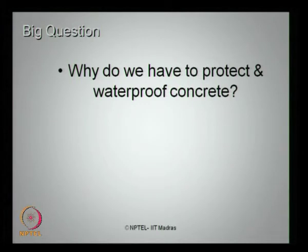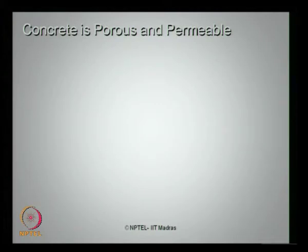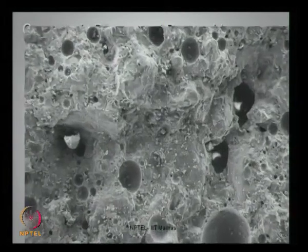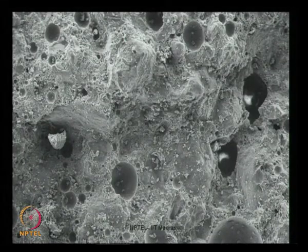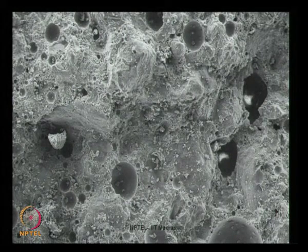It is a big question: why do we have to protect and waterproof concrete? Because it is solid and impermeable. If you understand it is impermeable and solid, then there is no need to protect it — but that is not true. It may not always be true. Concrete is porous and permeable. Look at this photograph, which is a 5000x SEM (scanning electron microscope) photograph of concrete. If you look more closely, you will see there are a lot of pores and permeability possible in concrete. So concrete is not a homogeneous impervious material. It has a lot of possibilities of pores and permeability, which challenge the performance of concrete under worst environments, especially in sea or offshore environments.